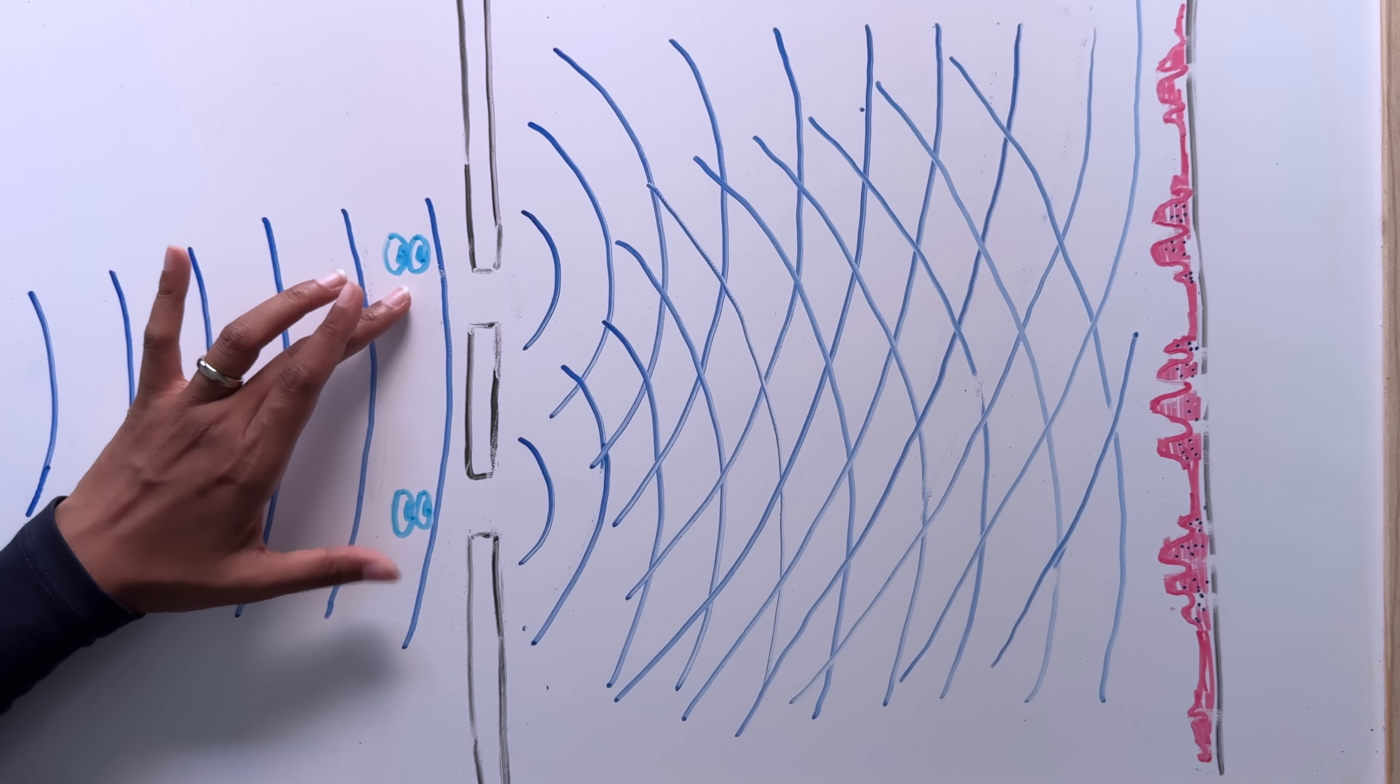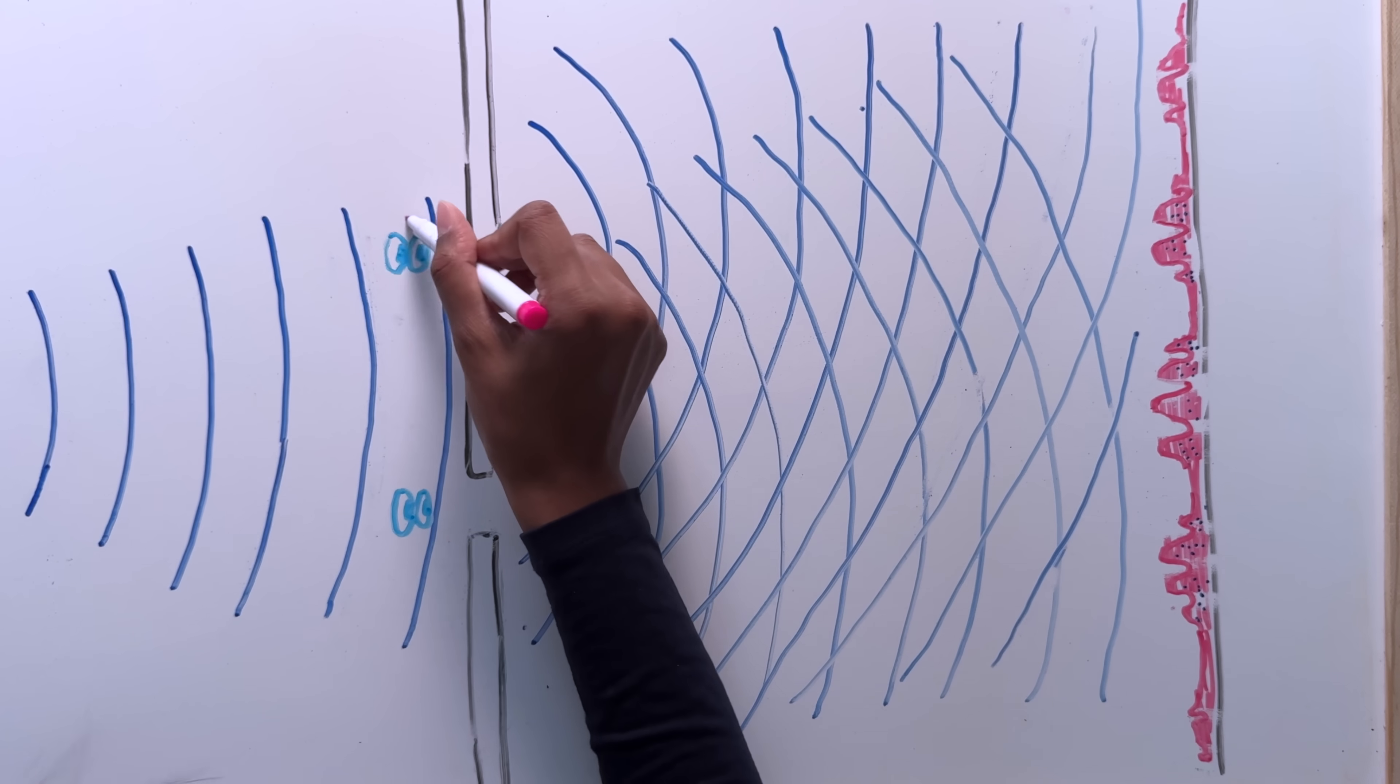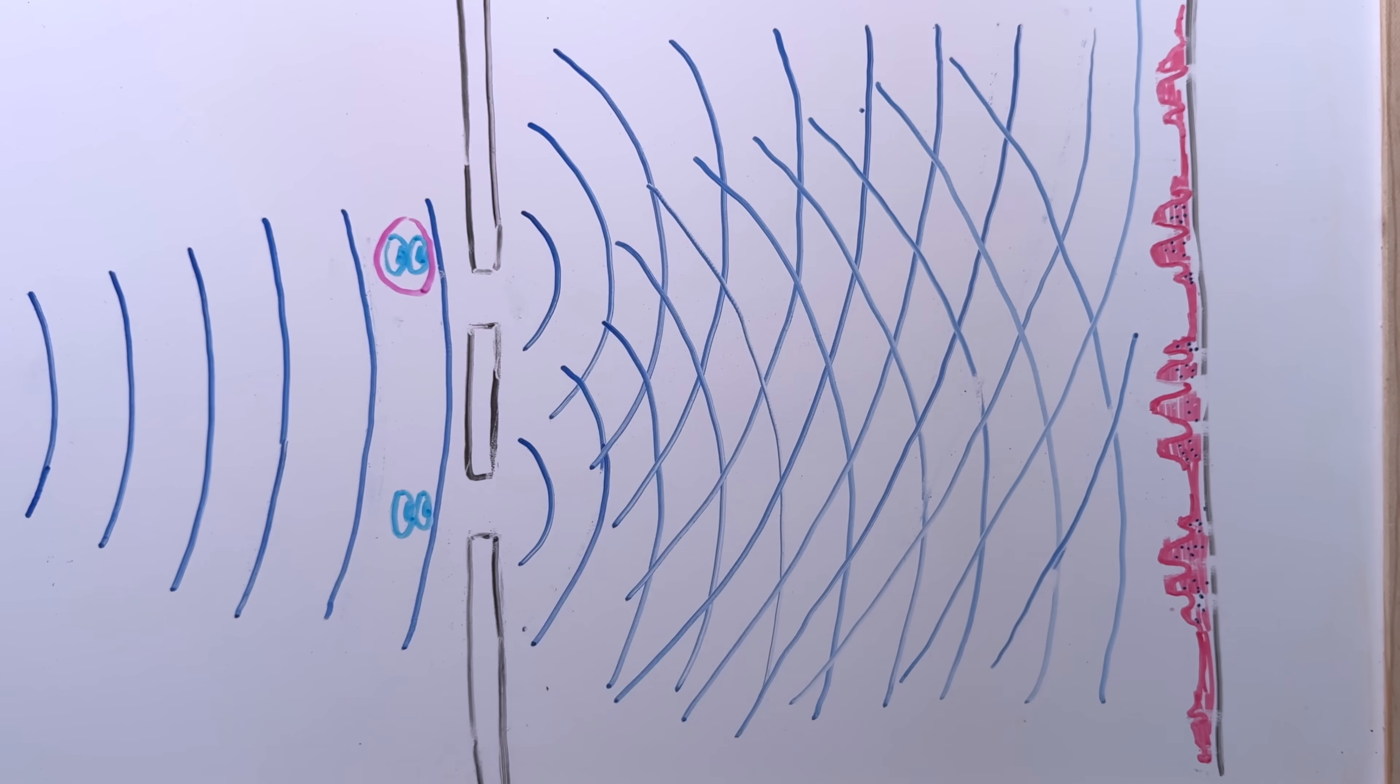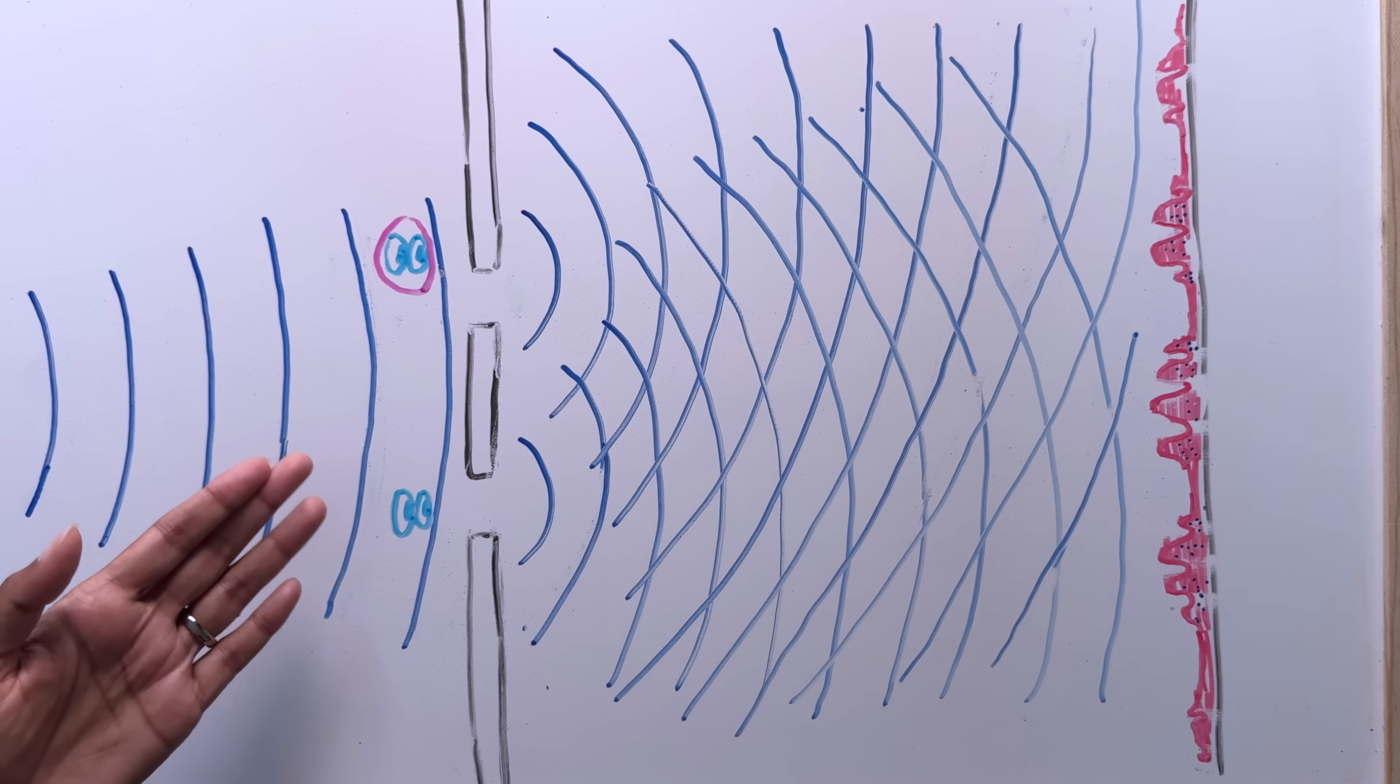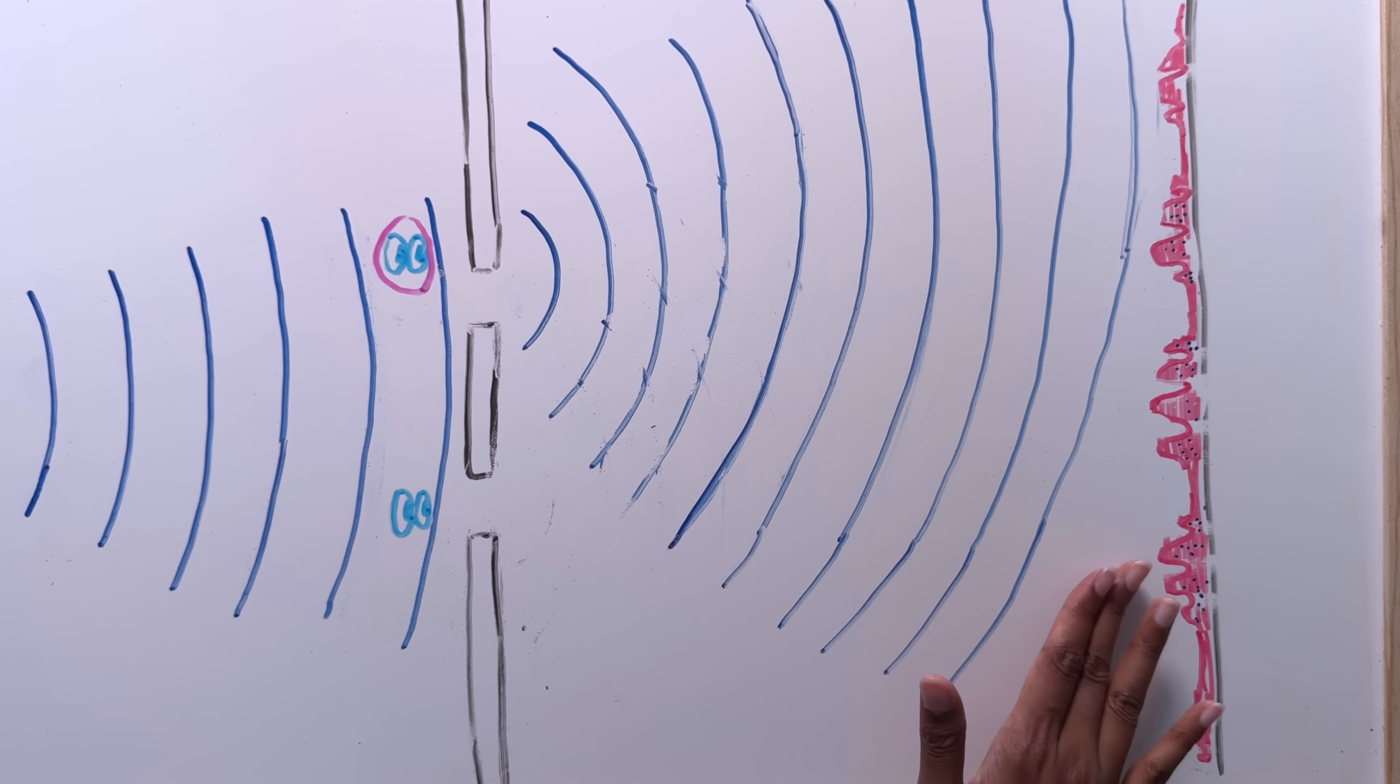But measurement in quantum mechanics doesn't work like that. So in quantum mechanics, when you try and measure an object that's in a superposition of two different things, like this electron going through both slits, then you will see a particular result. For example, this detector might see an electron go by. But now in quantum mechanics, what happens is that measurement changed the electron. Now it's only going through one of these slits, the one you observed. So far this is all correct, but here comes the myth.